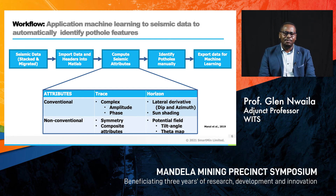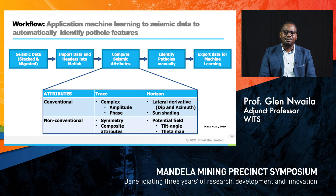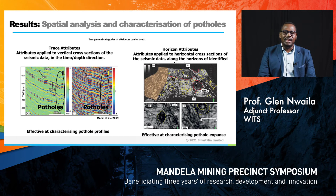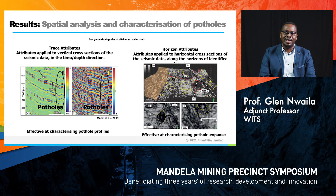There are two methodologies that have been developed, headed by colleagues Michael Westgate and Musa Manzi. The first is conventional Bayes methods and the second is non-conventional Bayes methods, both with their own advantages and disadvantages. After this stage, we look into the main categories: the first is trace attributes, which are more effective at characterizing pothole profiles as seen in the left diagram; the second is horizon attributes, which are more effective at characterizing pothole expanse, including their diameters and shapes in different volumes.